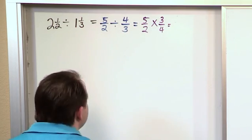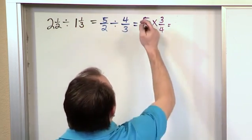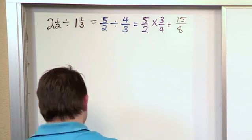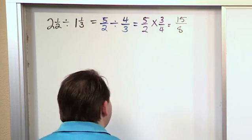And now that we have it into this form, we can multiply. 5 times 3 is 15, 2 times 4 is 8. So we get 15 eighths. And that is basically the answer, but it's improper.